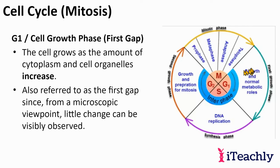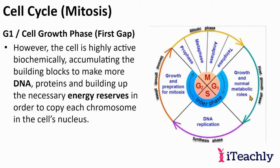G1 is the first growth phase. The cell grows in amount of cytoplasm and the cell organelles increase — this is where you start replicating your organelles. Also referred to as the first gap, since from a microscope viewpoint little can be visibly observed. However, it is highly active biochemically. It's accumulating the building blocks to make more DNA — those nucleotides, the A's, T's, C's, and G's — as well as the proteins used for that, and building up necessary energy reserves in the form of ATP in order to copy the DNA.